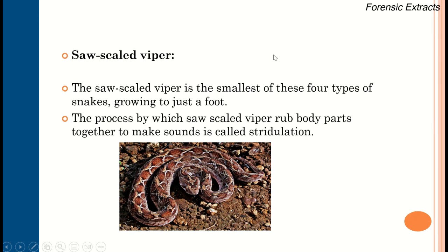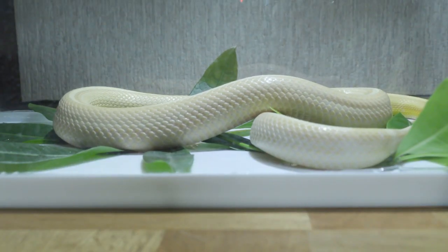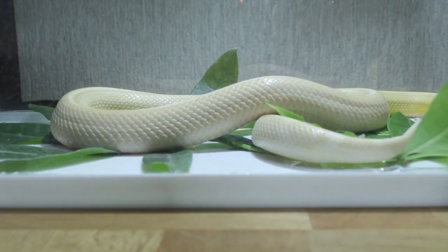The saw-scaled viper is the smallest of the four major snakes, growing to just about a foot. The process by which the saw-scaled viper rubs body parts together — because the scales are very sharp — producing a sound is known as stridulation.